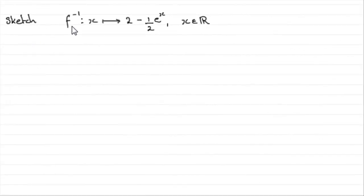Now we need to sketch the graph of the inverse function f to the minus 1 of x such that x maps onto 2 minus half e to the x, x being any real number. So how are we going to do this? I would think of this as built up from several graphs using transformations of graphs.